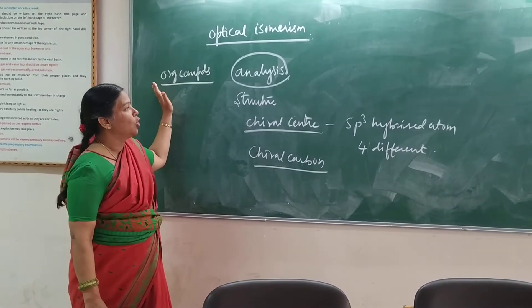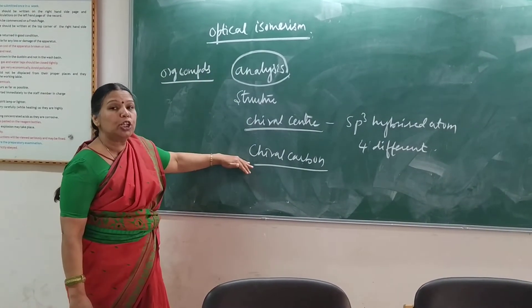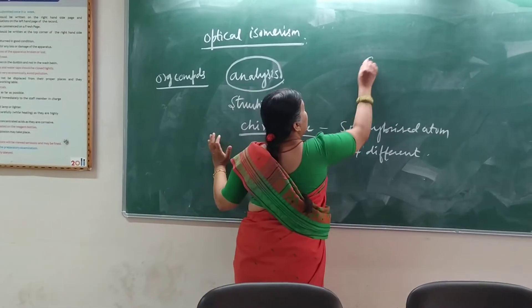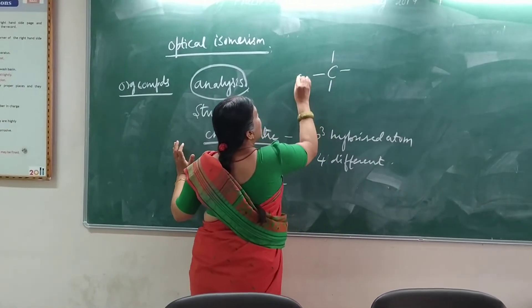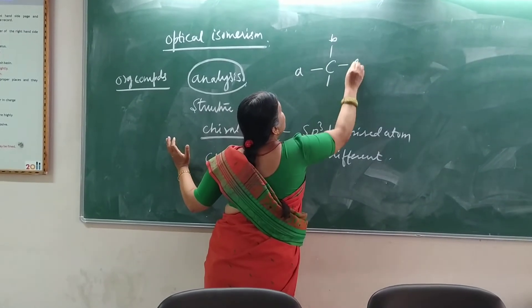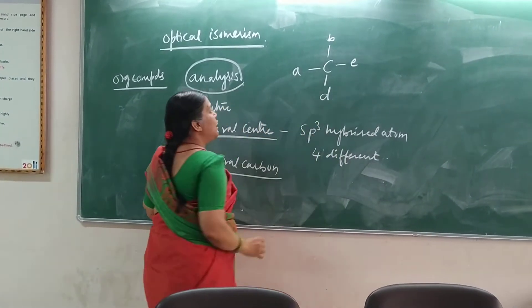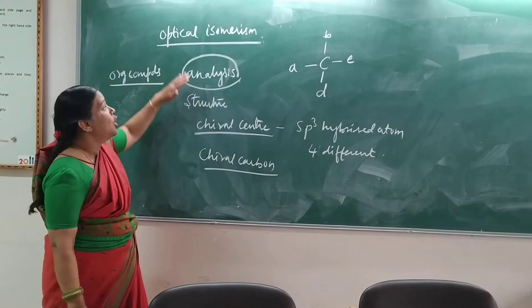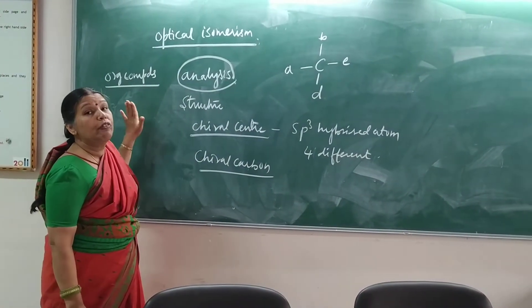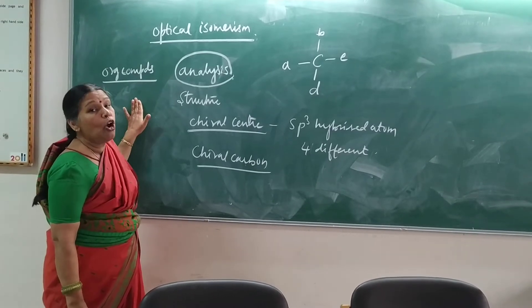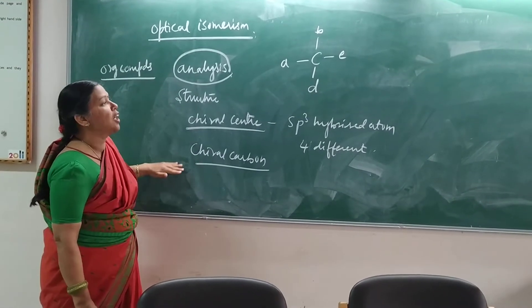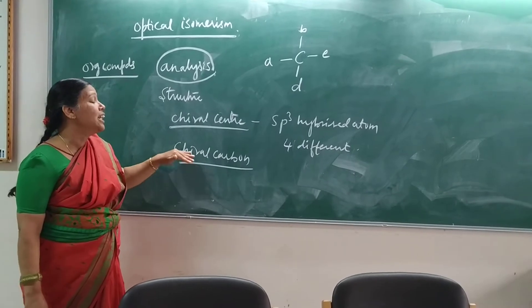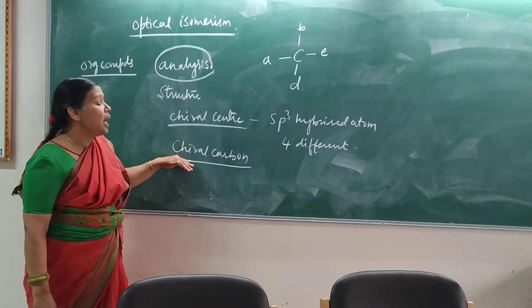In organic compounds, every component with a chiral carbon: what is chiral carbon? It is an sp3 hybridized carbon in which it is going to have four different groups. The chiral center and chiral carbon are the same thing. These are molecules which show optical activity. All those organic compounds with this special character we are going to call the chiral center and chiral carbon.